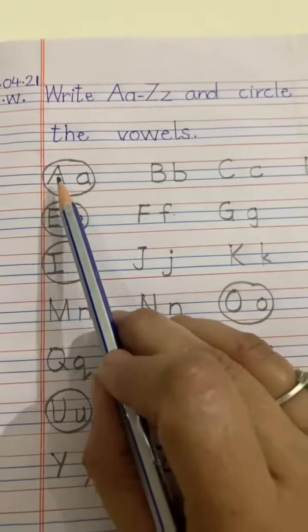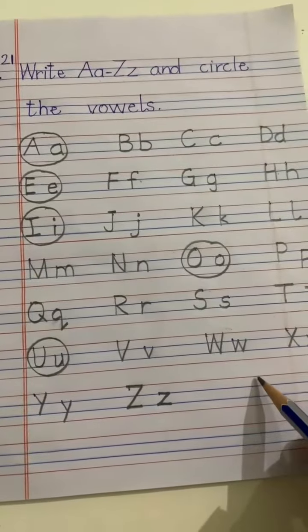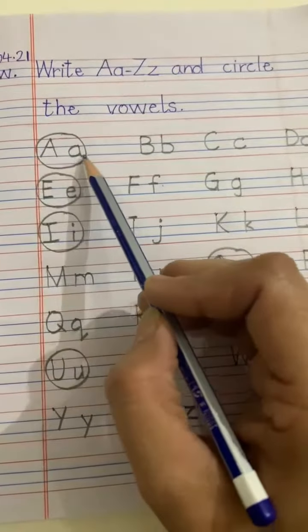So, write down A to Z in your English notebooks and after writing, circle the vowels.